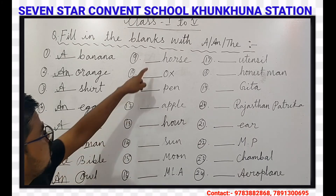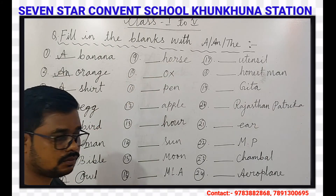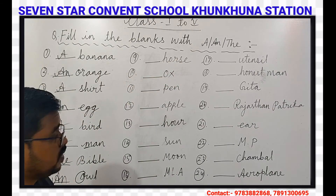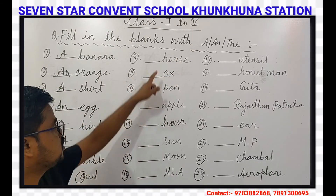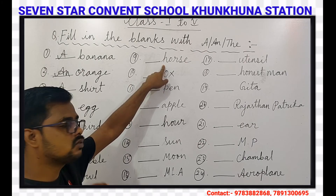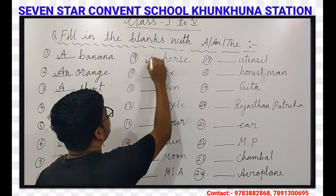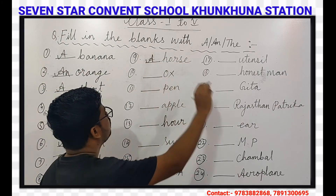Our next question is Horse. The first letter of Horse is H, and H is a consonant, so A will come here.